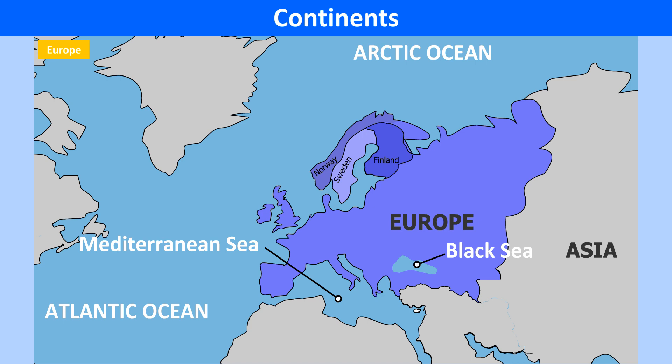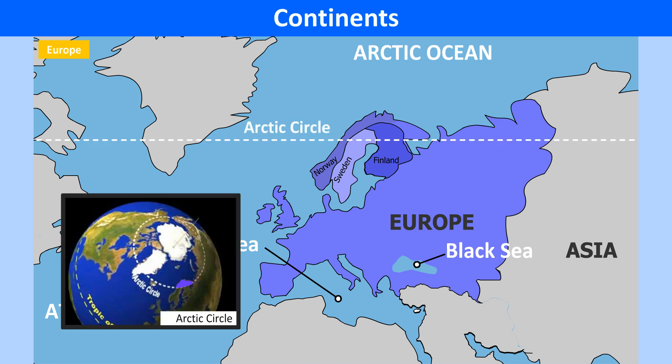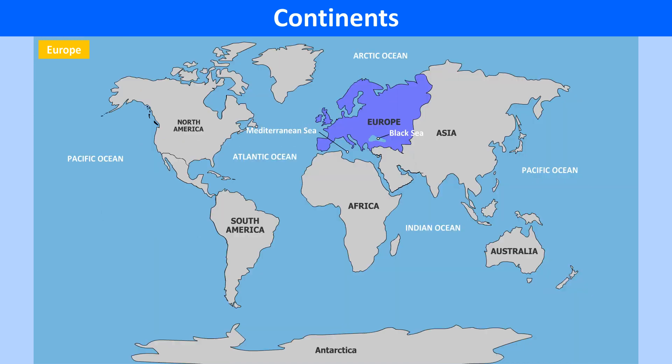Europe is also marked by thousands of lakes in Finland, Norway and Sweden. The Rhine, Rhône, Danube, Volga, Dnieper and Thames are some of the major rivers here. The Arctic Circle passes through it. This continent lies mostly in the western hemisphere.